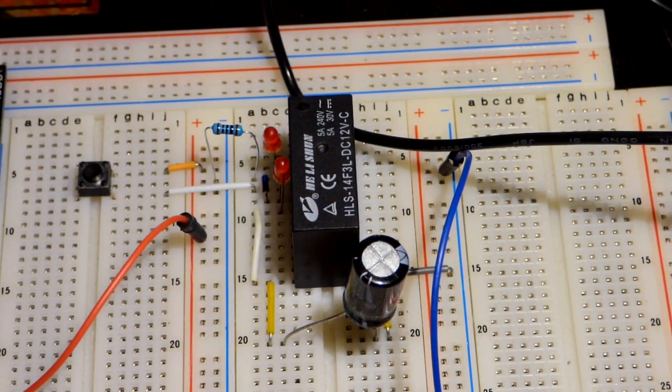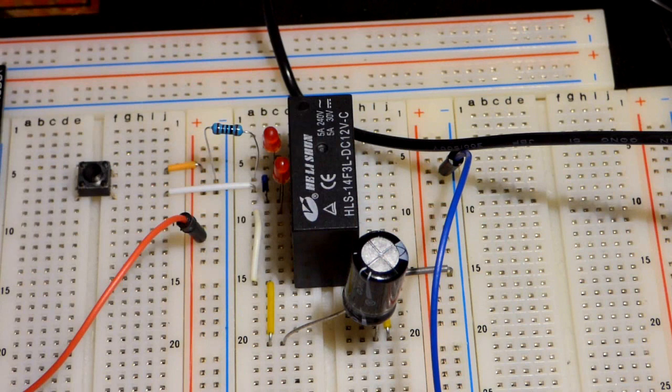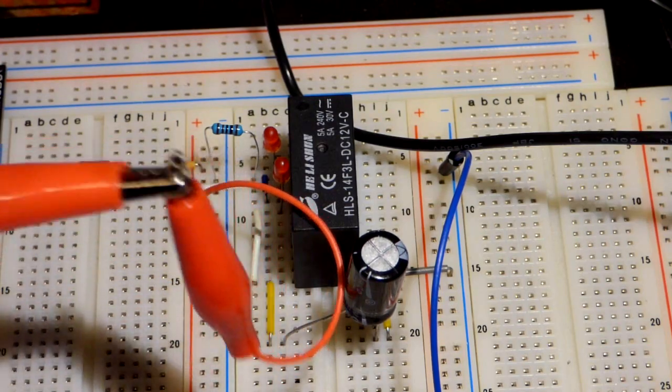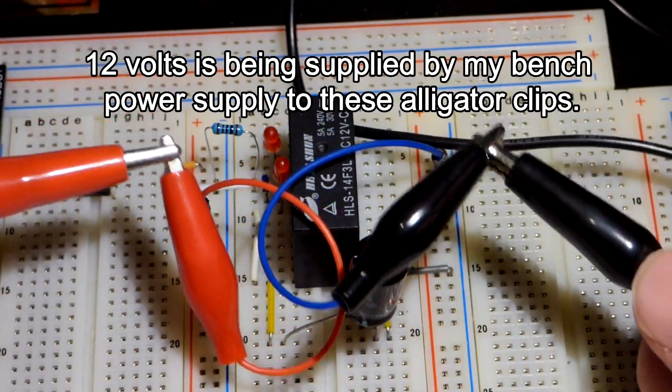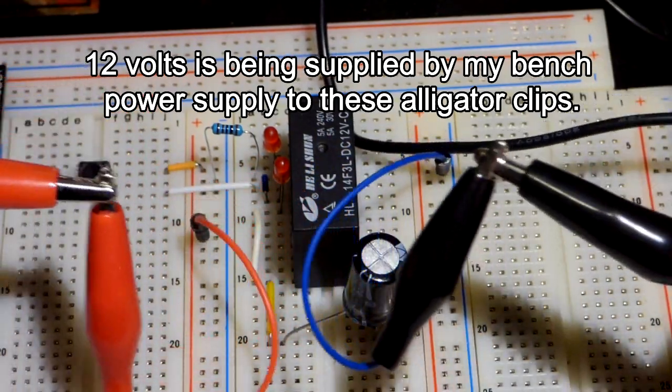Not terribly complicated, but for somebody that just learned the capacitor, I think it is fairly complicated enough. And the wiring is kind of complicated. I have the alligator clips here. They're going to the bench power supply. I'm powering this with 12 volts.